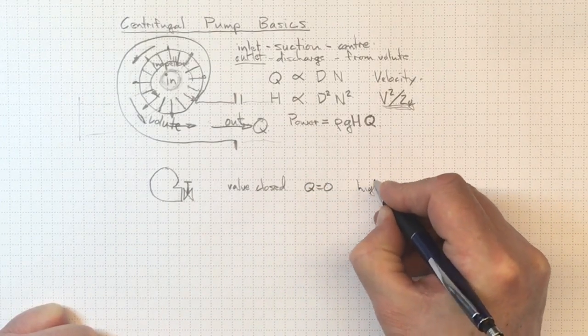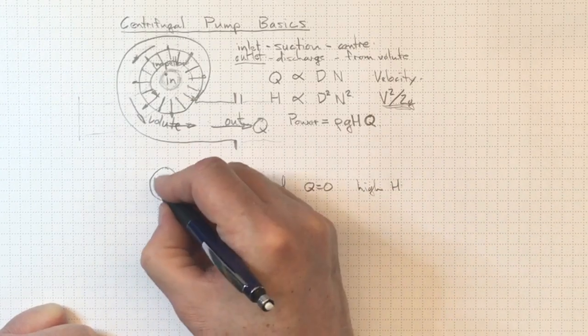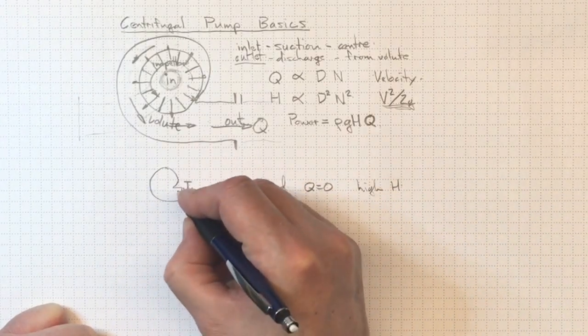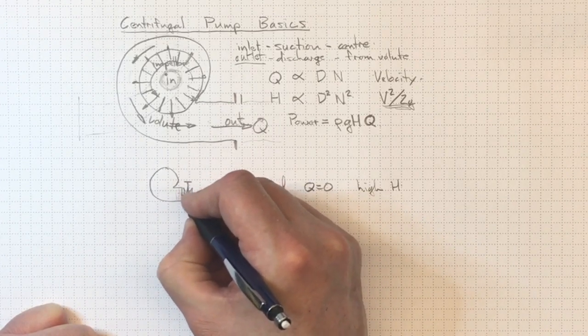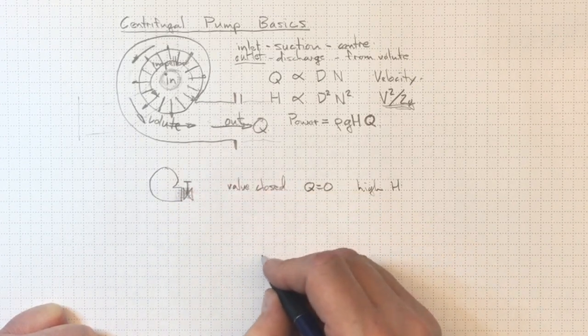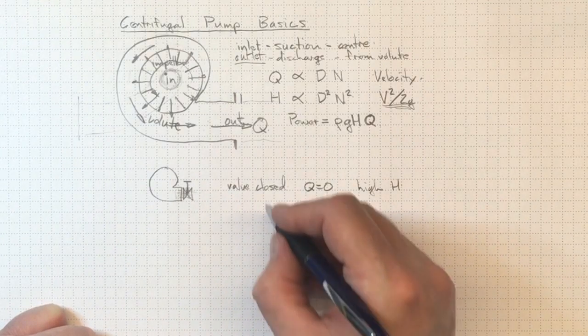So Q is equal to zero, but H is quite high. The pump will be spinning around, will generate quite a lot of head rise across the pump. There'll be quite a bit of pressure here, pushing against the valve, trying to drive the flow through the valve. And of course, because the valve is closed, there'll be no flow through the valve.